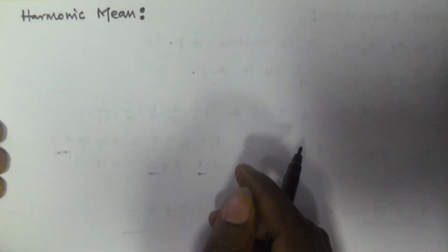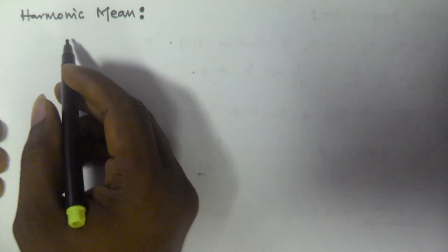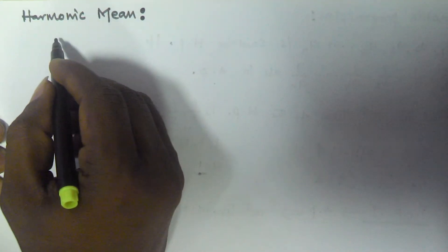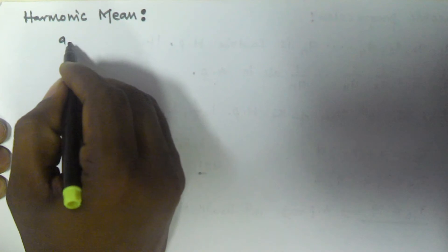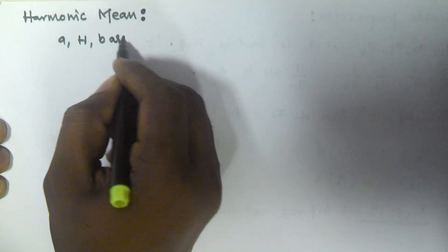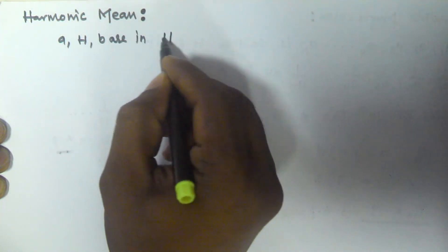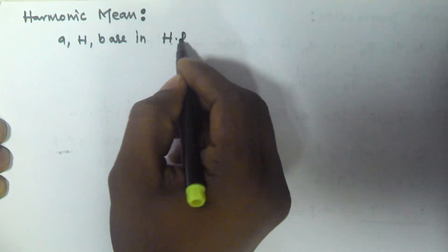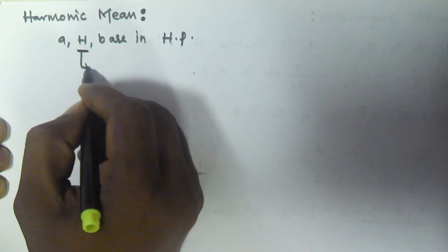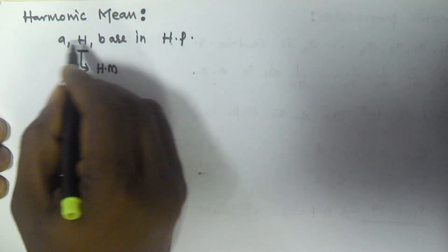Hello friends. In this video we will see how to calculate the harmonic mean. When three numbers a, h, b are in harmonic progression, the middle number is called the harmonic mean of the other two numbers.